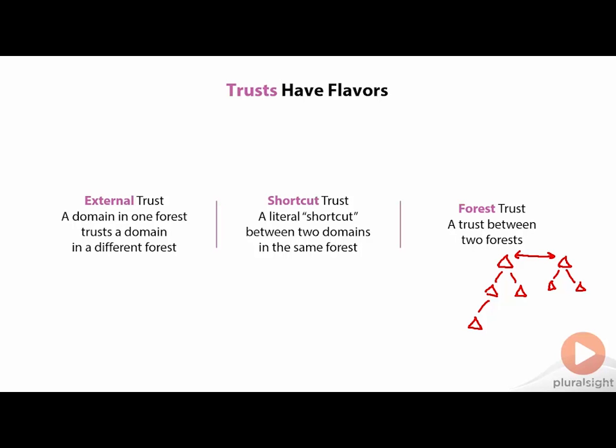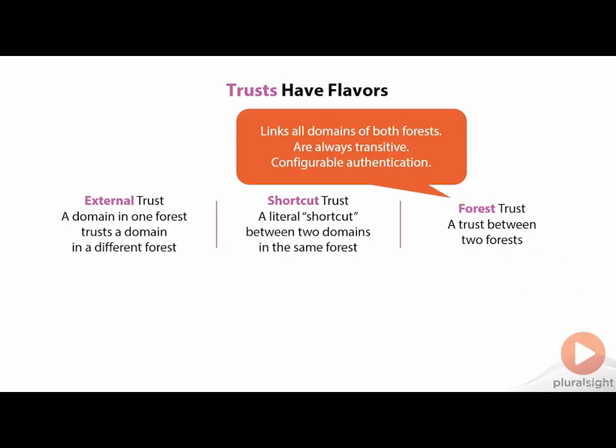For example, if company.pri buys a jellybean factory at jellybeans.com, you need to connect those two forests. Generally you want to connect the two forests together in their entirety, so you create a forest trust between them. Forest trusts will link all the domains of both forests, are always transitive, and also support configurable authentication. Rather than creating a bunch of different external trusts that can get unwieldy over time, configurable authentication allows you to configure the authentication between the forests so that even though it is completely transitive, you can lock it down to certain elements. We'll talk later about how to actually configure a forest trust between our company.pri domain and our specialized.net domain.